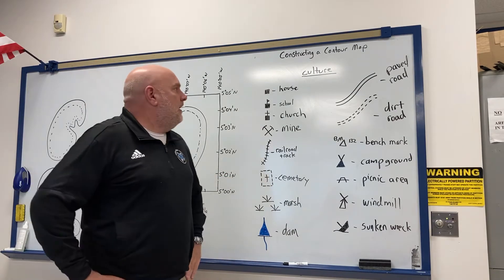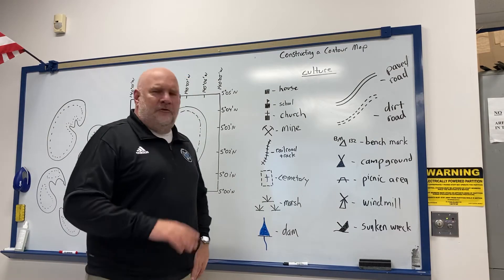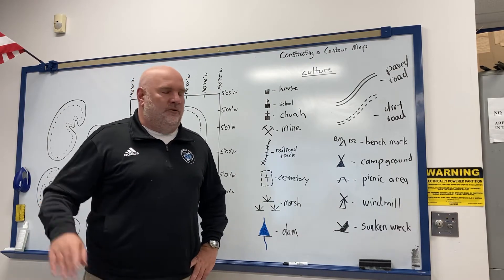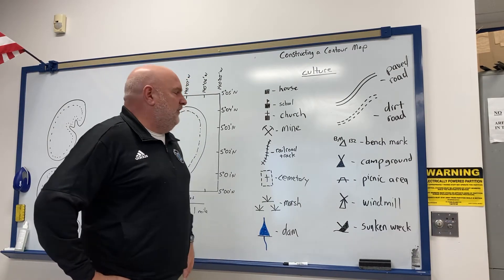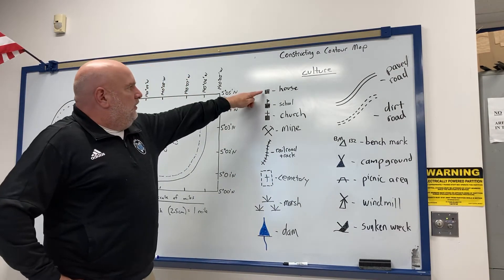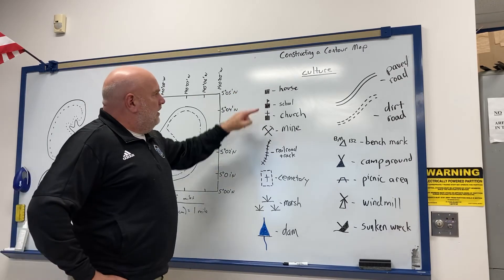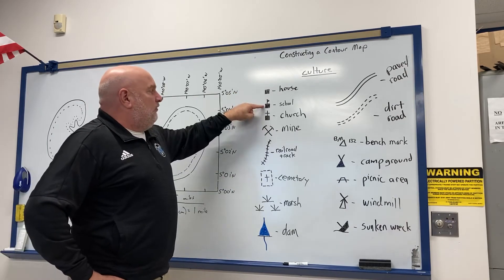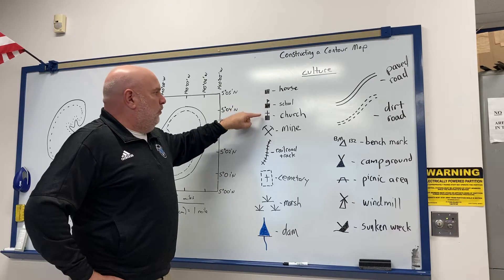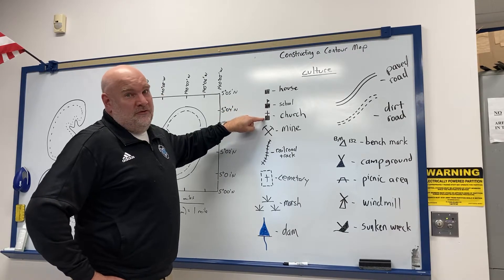On the maps there are many symbols, but as examples: a little black square typically represents a house, a little black square with a flag on it represents a school, and a little black square with a cross on it represents a church.